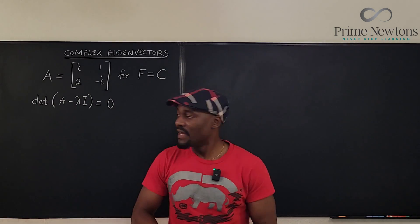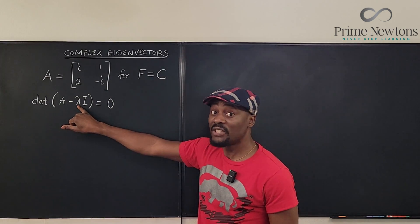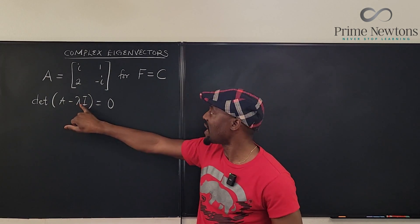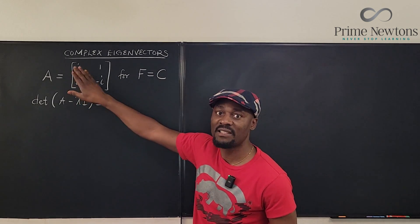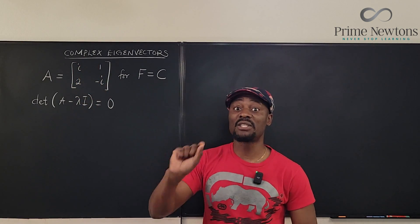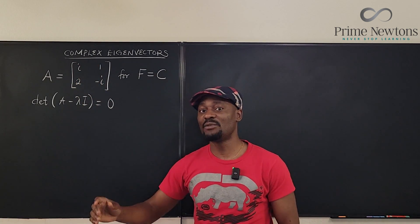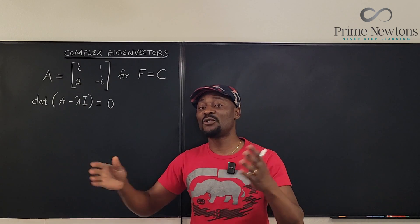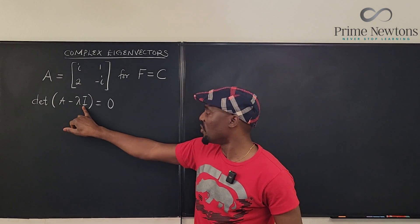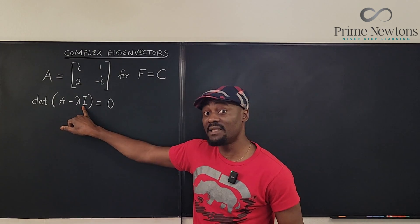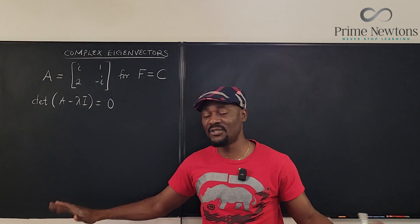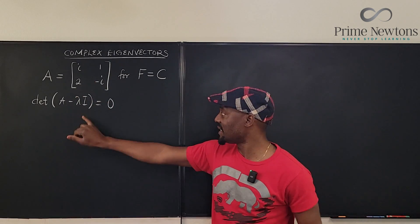We have to multiply lambda, which is our eigenvalue, by I to make it easy to subtract from a matrix. You can't subtract numbers from matrices — you have to subtract two matrices. So to make things easy, we multiply by the identity matrix. For a 2x2 it doesn't change anything, so that's the idea of this I being there.